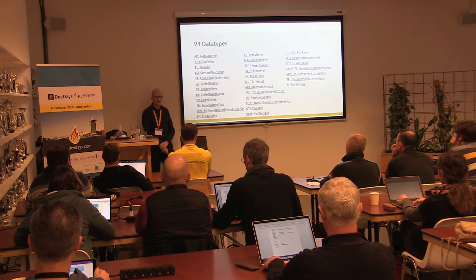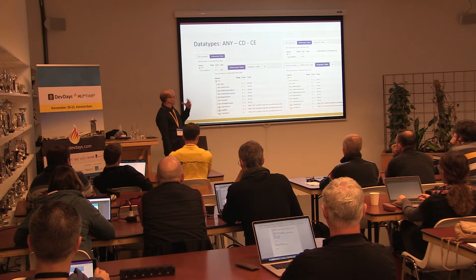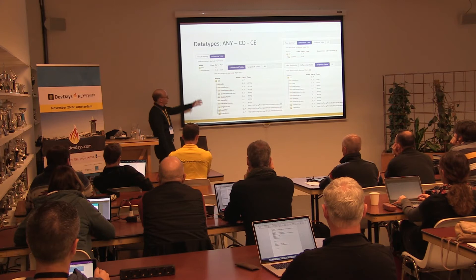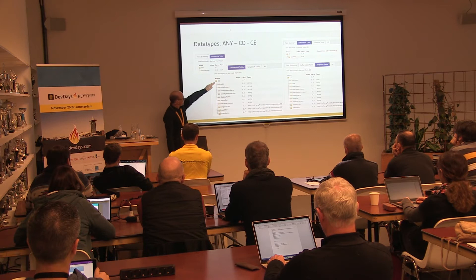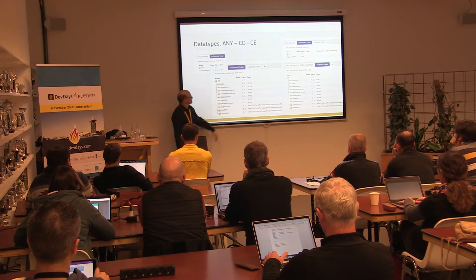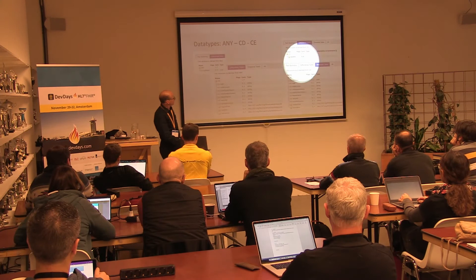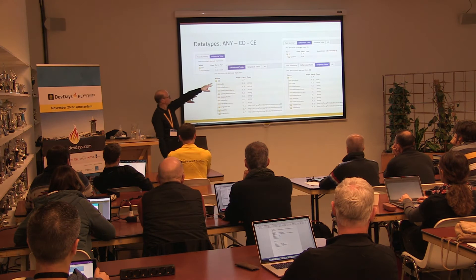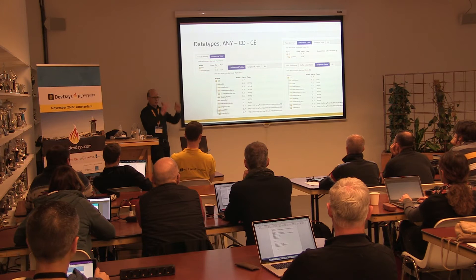V3 has a lot of data types as the base of CDA. For example, CD concept descriptor, which represents a code. Graham extracted it from the CDA definition, and this is now modeled. What you see here is the visualization of this logical model in the implementation guide. You have the CD concept descriptor type with a code, a code system, and all the values you know from V3, derived from the any data type. Then the coded equivalent data type is the differential — it's derived from the concept descriptor type and has no qualifier. When you look at the snapshot, the qualifier gets removed from the differential.